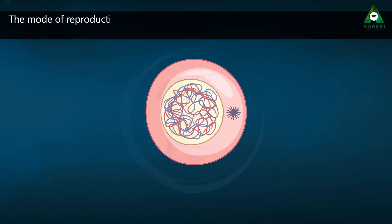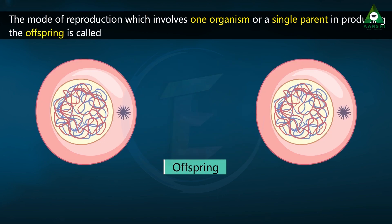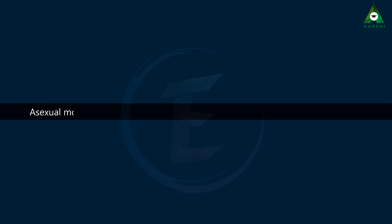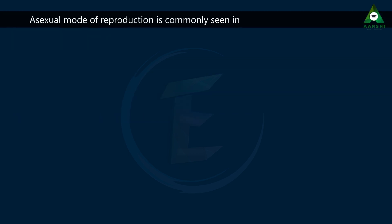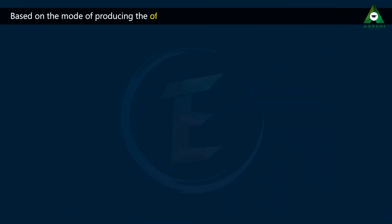The mode of reproduction which involves one organism or a single parent in producing the offspring is called asexual reproduction. Asexual mode of reproduction is commonly seen in unicellular and lower animals. Based on the mode of producing the offspring asexually, it can be classified into the following types.